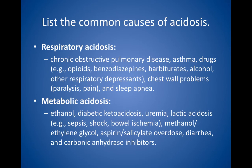The other type of acidosis is metabolic acidosis, which can result from ethanol, diabetic ketoacidosis, uremia, lactic acidosis from sepsis, shock, or bowel ischemia, methanol or ethylene glycol, aspirin or salicylate overdose, diarrhea, and carbonic anhydrase inhibitors.